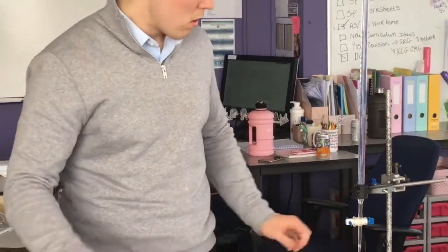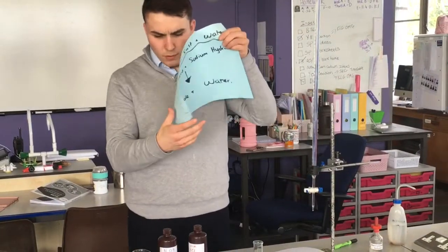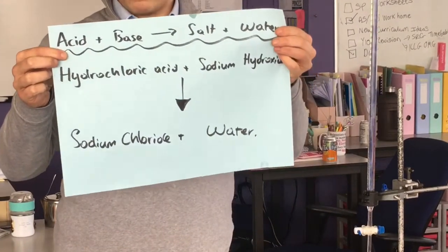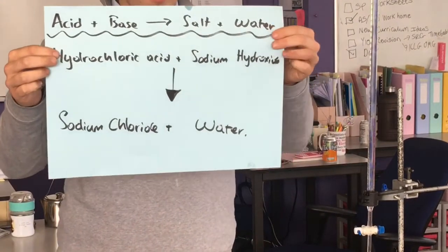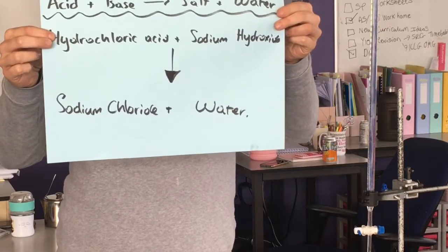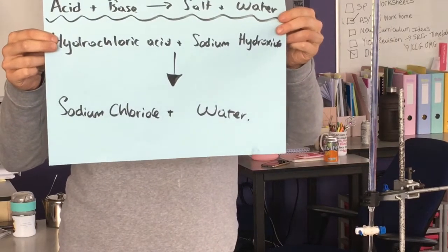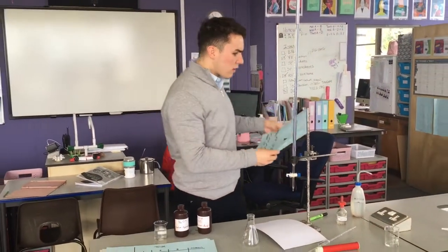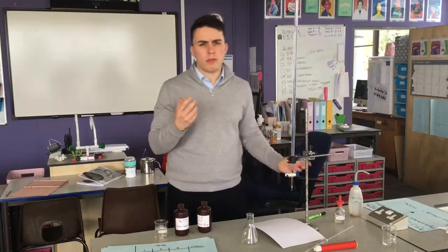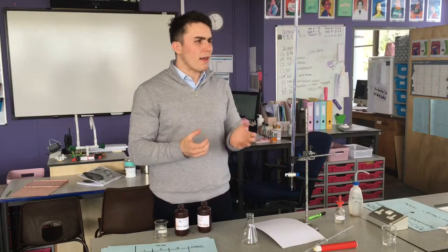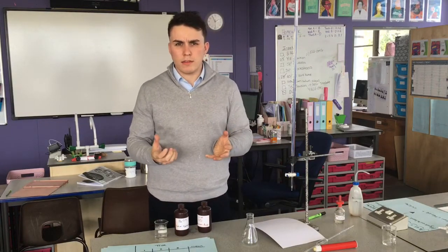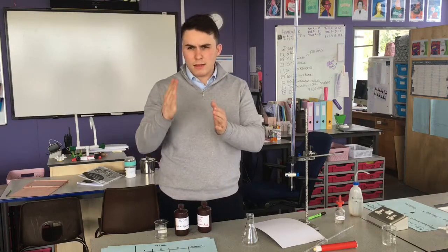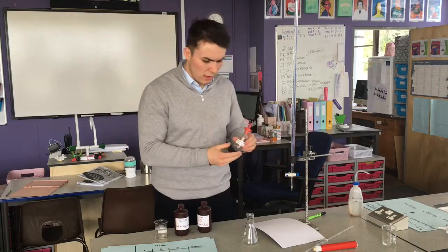We know from our work in chemistry that an acid plus a base gives us salt plus water. So we're going to have hydrochloric acid plus sodium hydroxide, and it's going to give me sodium chloride — a.k.a. table salt — and water. We're using a titration because I want to know the exact volume of acid required to neutralize my alkali, or my base. I want to know the exact end point of my reaction.